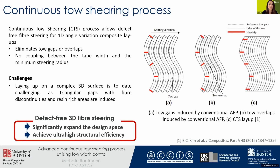What distinguishes the continuous torsion shearing process from conventional automated layup processes — for instance, Automated Fiber Placement (AFP) or Automated Tape Layup (ATL) — is that the CTS process allows defect-free fiber steering for 1D angle variation composite layups. It eliminates tow gaps or overlaps by gripping the tows and shearing them in-plane. Whereas during AFP the head is always kept perpendicular to the tow path, during the CTS process the head is kept steady and the tow path is shifted in-plane, which allows the fibers to be sheared into place.